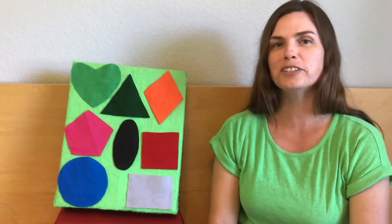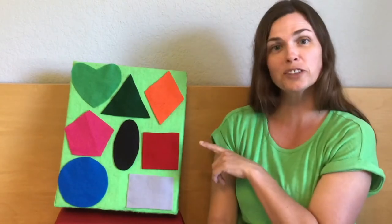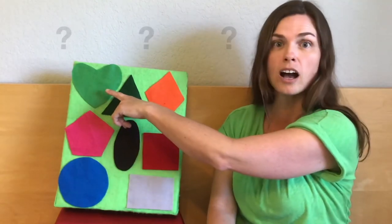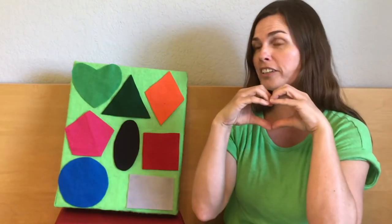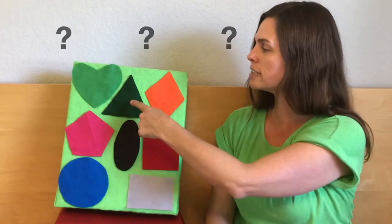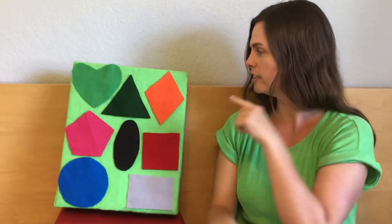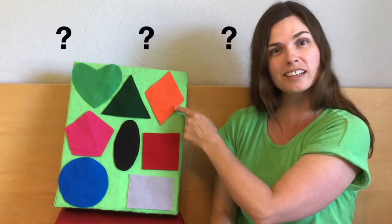Before we find Baby Roo, we have to know exactly what we're looking at. So first, let's go through these colorful shapes. What do we have up here? We have a light green heart. And what's this? This is a dark green triangle. And this one, what color is it? That's right, it's an orange diamond.